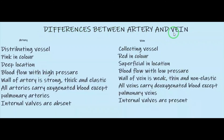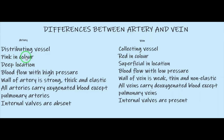Now let's see the differences between artery and vein. Artery is a distributing vessel; vein is a collecting vessel. Arteries carry blood away from the heart to various organs, so it is called distributing. Veins collect blood from different organs and bring it to the heart, so it is called collecting. Arteries are pink in color because oxygenated blood flows through them; veins are red in color because deoxygenated blood flows through them.